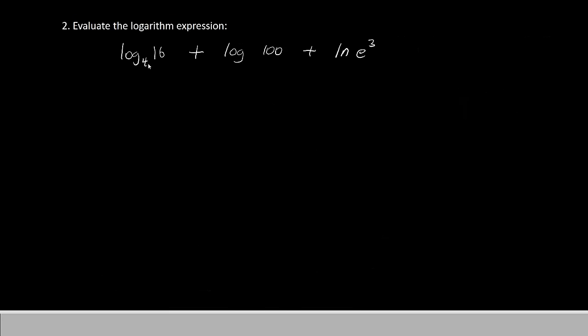All right, this time we have to evaluate this logarithmic expression, log base 4 of 16 plus log 100. This is referred to as common log, because there's no base written below it. Plus this other one called ln of e to the third. This is called natural log. So we have three different types of logs here, and I'll go through how to operate on each of them.